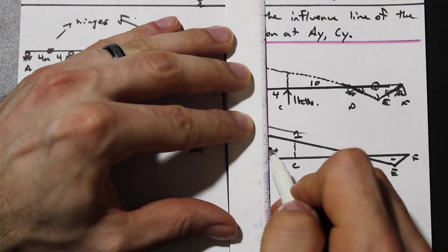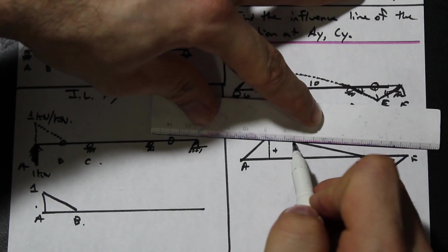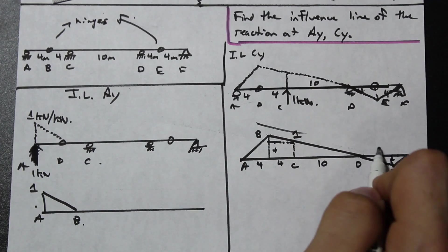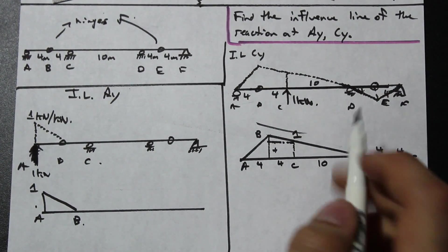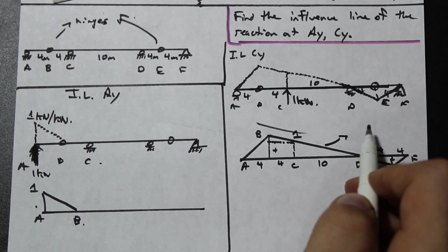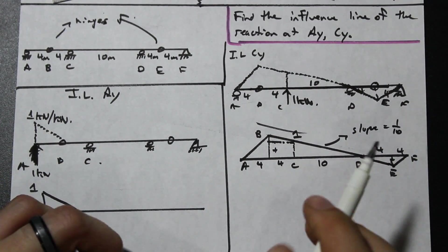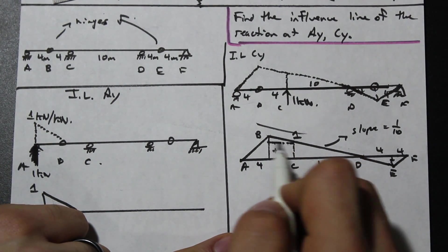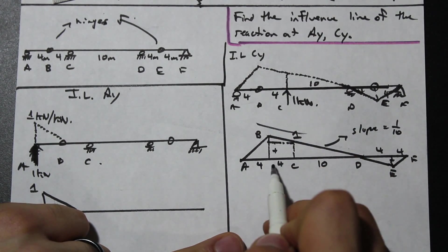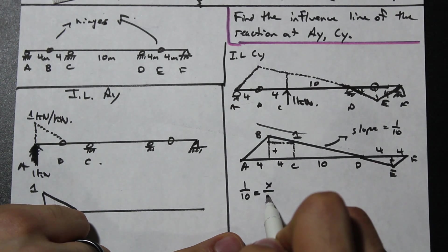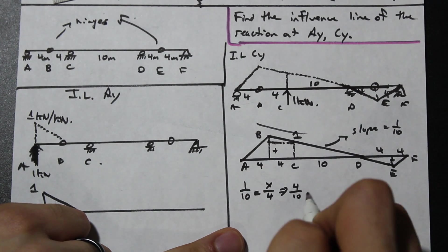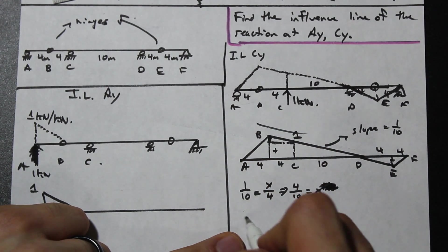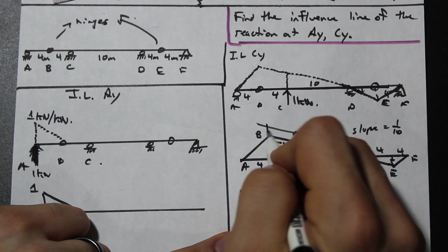Now we use the slope of the line and similar triangles to find the specific values. The total span is ten meters with four-meter segments. We have a rise of one and a run of ten, so the slope is one over ten. Using that slope, we need to find the rise of the small triangle to the left of C. Slope equals rise over run: four times one over ten equals four over ten, which we add to one to get the peak at B — that's 1.4.